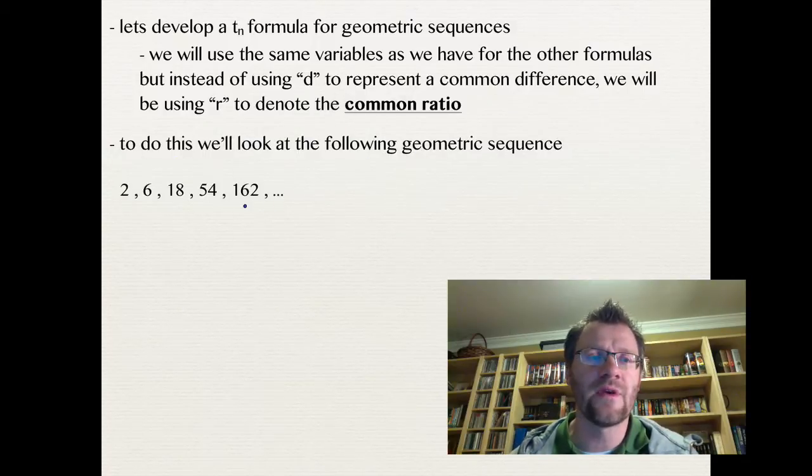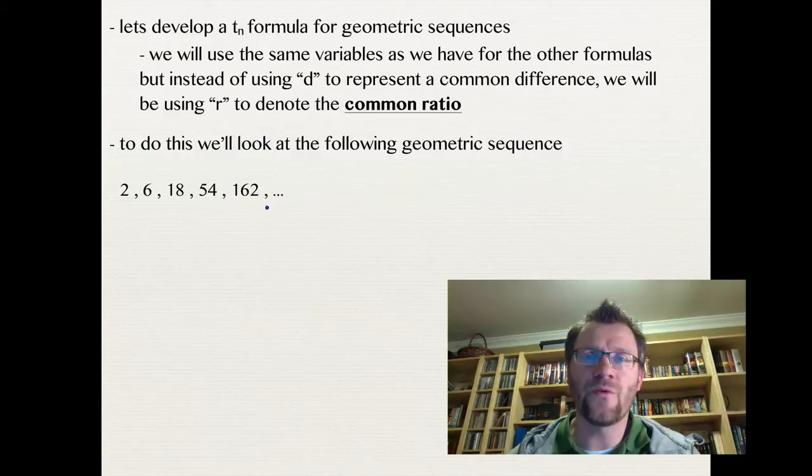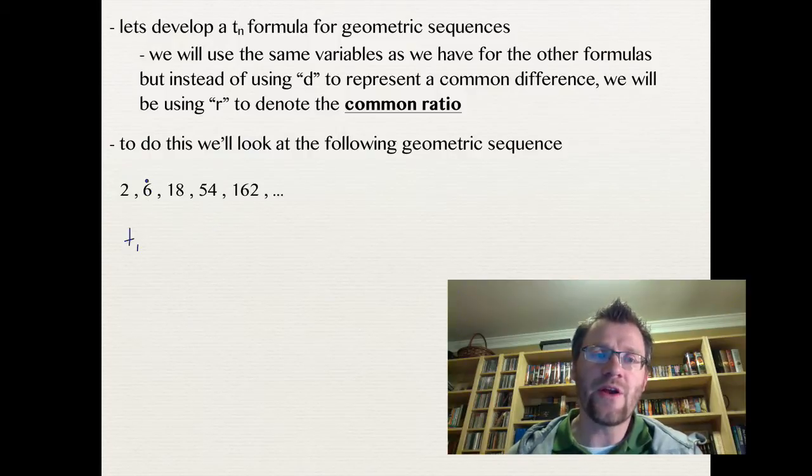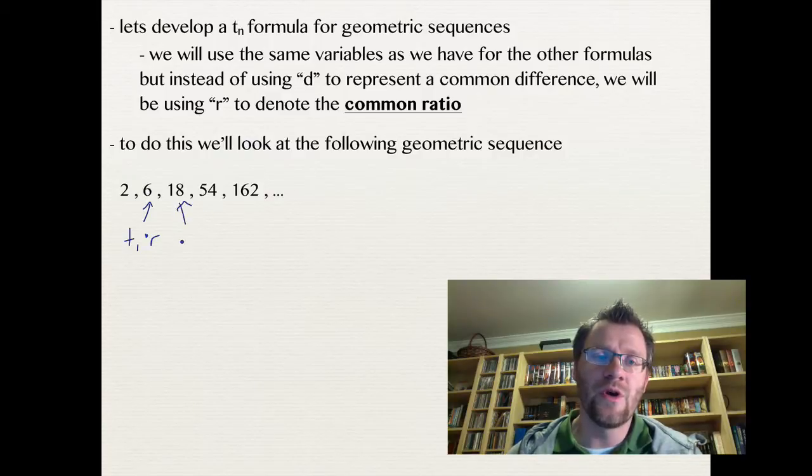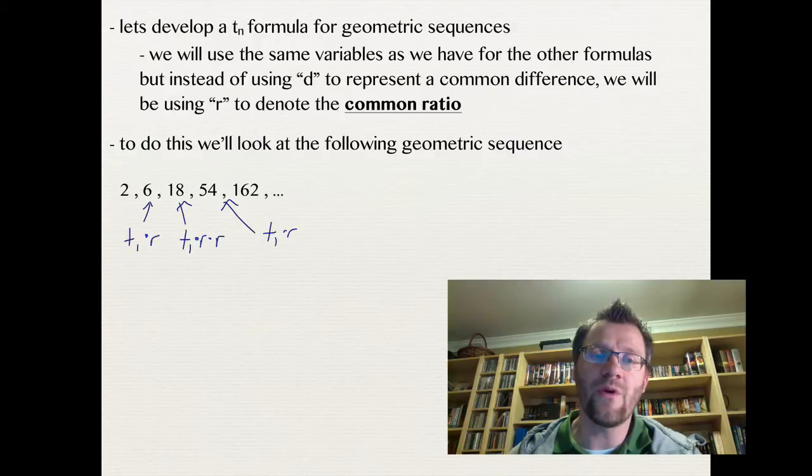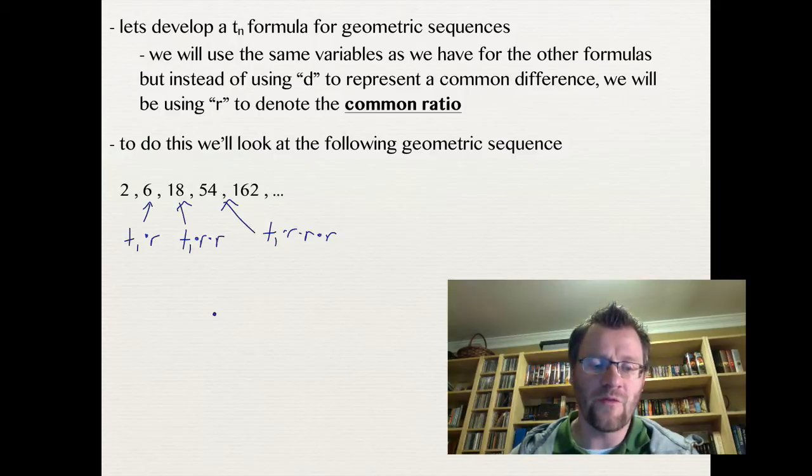So to do this, we're going to look at the following geometric sequence. 2, 6, 18, 54, 162. So if you look at it this way, 2 is our first term, T1. In order to get our next term, I multiply by our common ratio. And so that T1 times R is our second term. Our third term would be that result multiplied by R again. So T1 times R times R. Our 54 there would be our first number multiplied by R once, multiplied by R twice, and multiplied by R a third time.